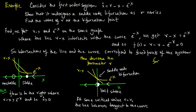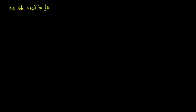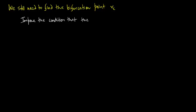For r less than rc, the line r minus x and the curve e^(−x) do not intersect at all, so there are no fixed points. We still need to find the bifurcation point rc. We impose the condition that the graphs of r minus x and e^(−x) intersect tangentially.